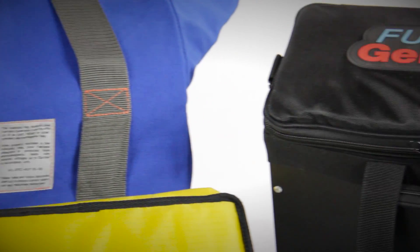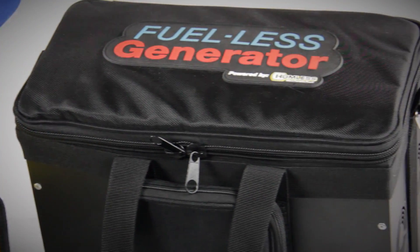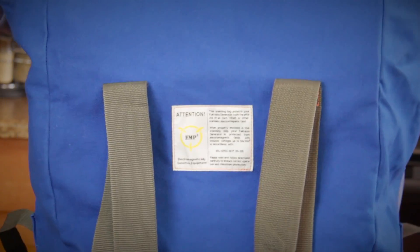The EMP3 shielding bag is designed specifically for the fuel-less generator. It's made from a proprietary double shielding copper woven mesh. This mesh blocks the frequencies used by an EMP and conducts high voltages around the bag.